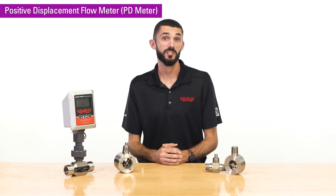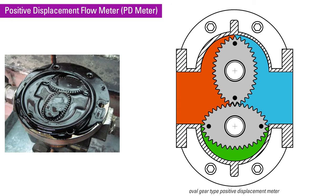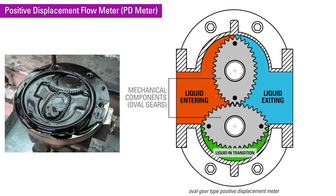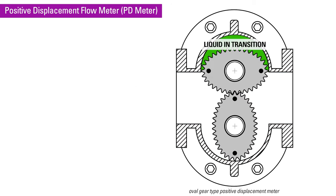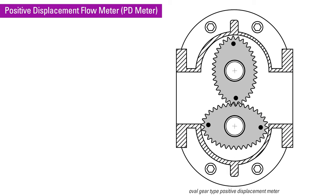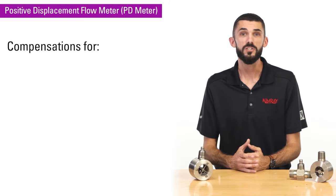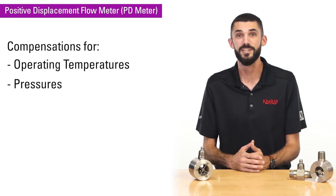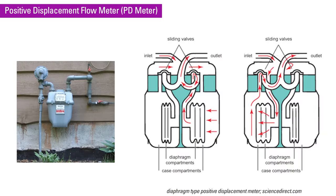The final type of flow meter we're going to talk about is a positive displacement meter. Positive displacement meters use fluid to displace mechanical components to measure volumetric flow. Compensations for operating temperatures and pressures are needed for accurate measurements, just like with all the other meters. The most common type of positive displacement meter is a diaphragm meter, which can be found outside of most houses to meter natural gas usage for utility companies.